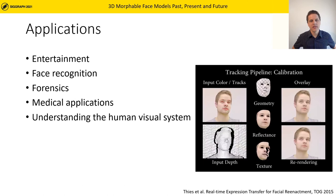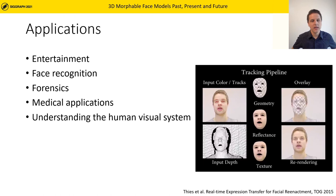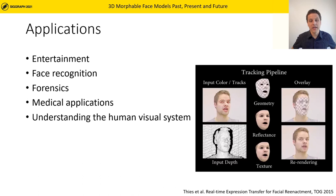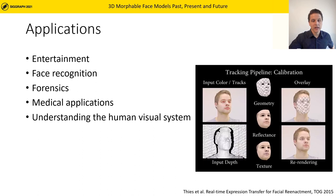3D morphable models have been widely applied in various different settings. The most prominent may be the entertainment industry, where facial reenactment relies on both recent deep learning methods and strong 3D modeling. Especially in the early years, morphable models became popular for face recognition. In forensic applications, 3D morphable models were applied for face reconstruction from dry skull, virtual aging, and the generation of police sketches.